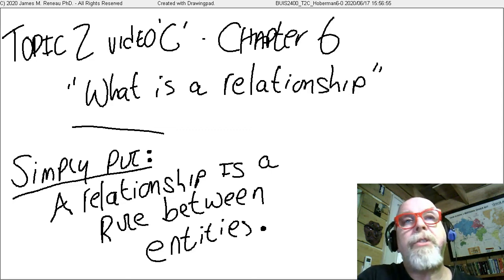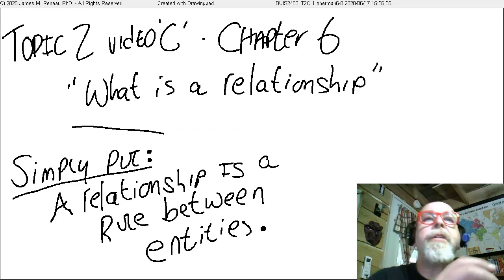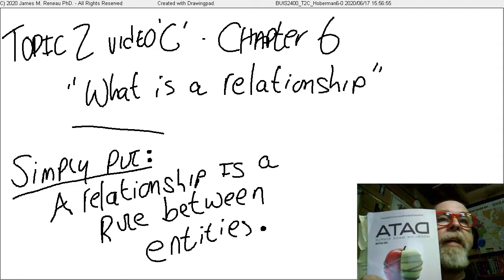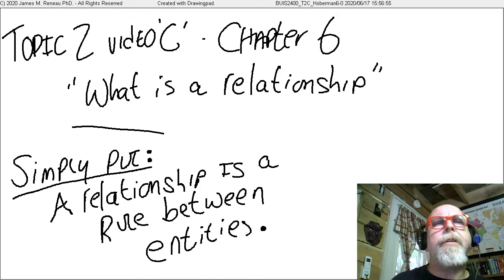This is topic two, video C, and corresponds to and summarizes chapter six from Hoberman's Data Modeling Made Simple. The chapter is entitled What is a Relationship?